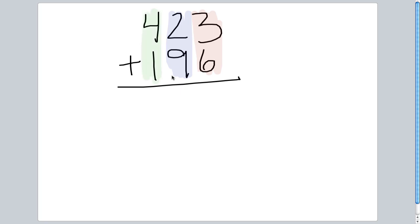Let's start with our largest part, our hundreds part. The 4 and the 1 here represent hundreds. Let's add them together. 400 plus 100 gives us a total of 500.